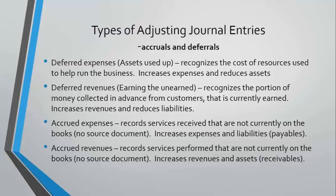Deferring revenues: when we collect money in advance, we cannot record those as earned revenue. We defer them by recording unearned revenue, which is a liability account. As part of accrual accounting, we have to be careful about timing our revenues based on when we actually sell the product or perform the service. Usually in the adjusting entry, because we've already set up an unearned liability, we debit the liability to reduce it and credit a revenue to show what we've earned.